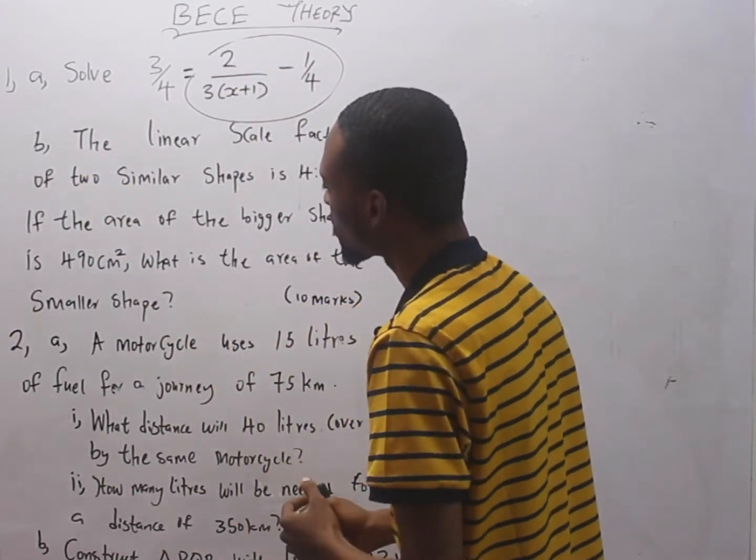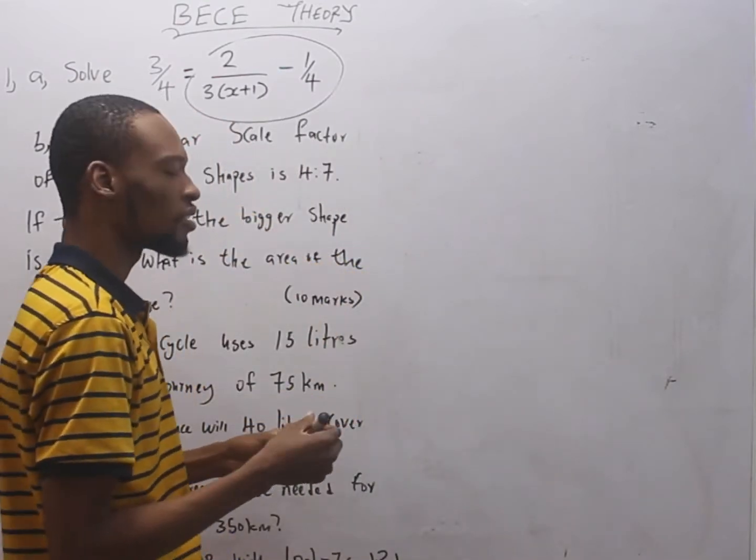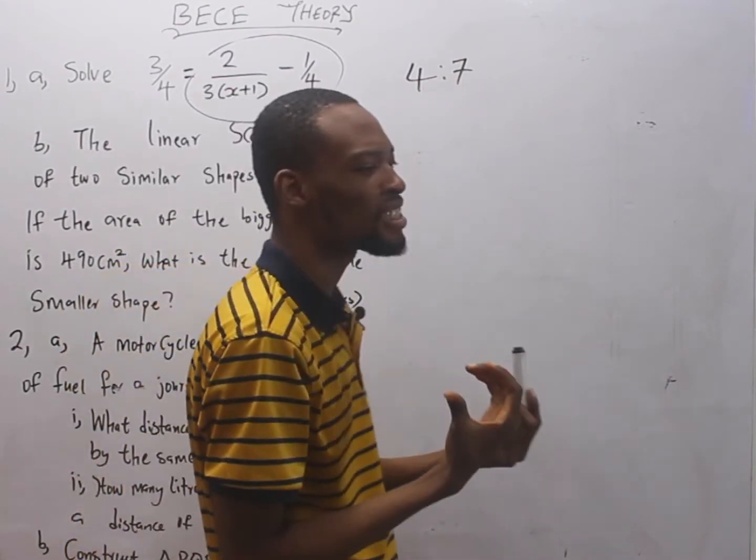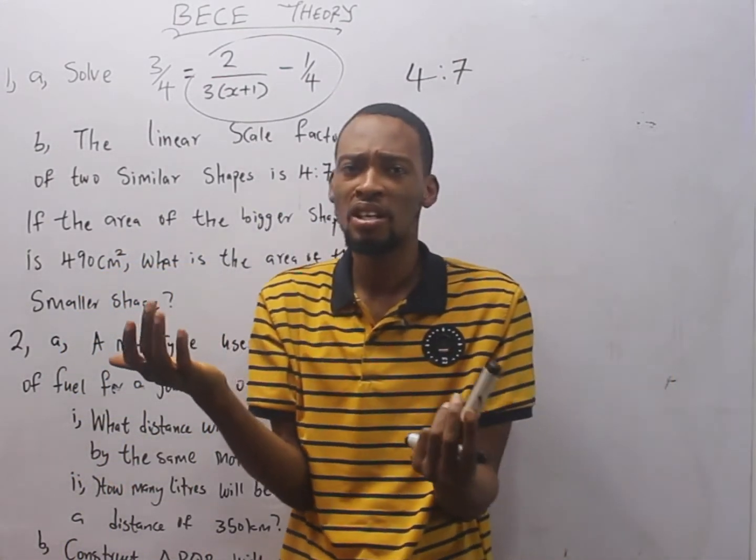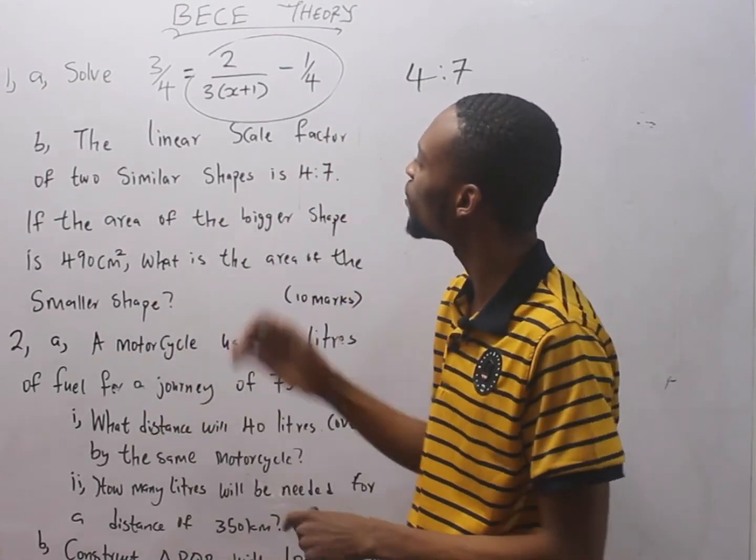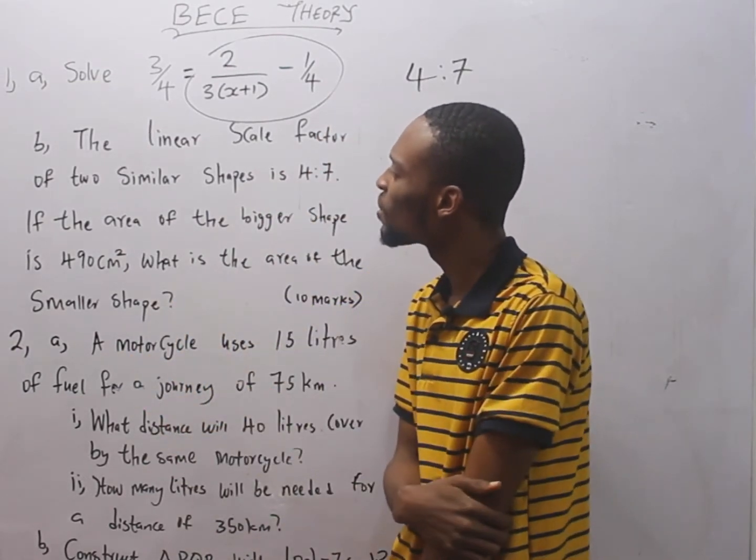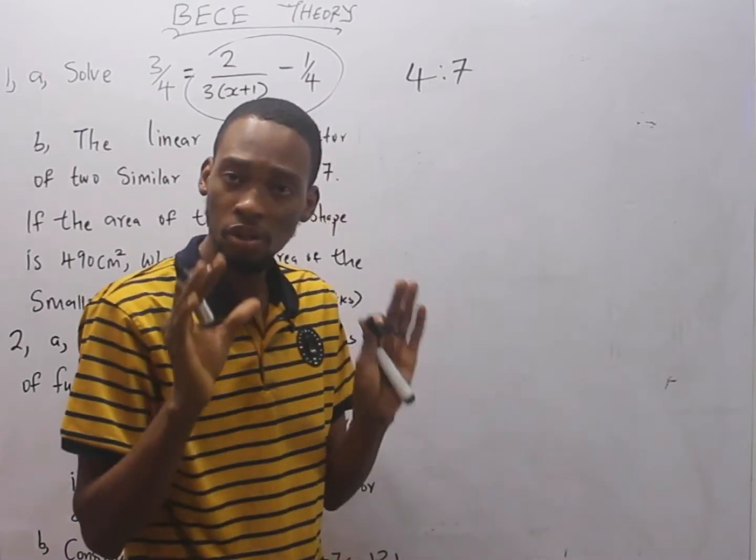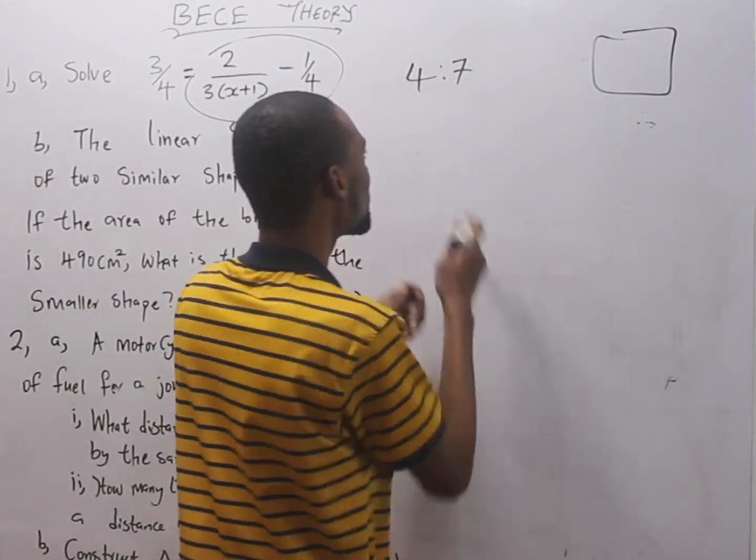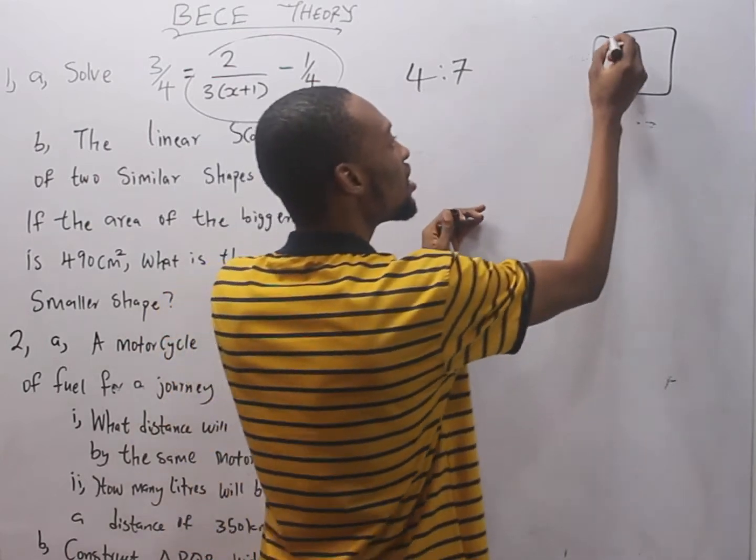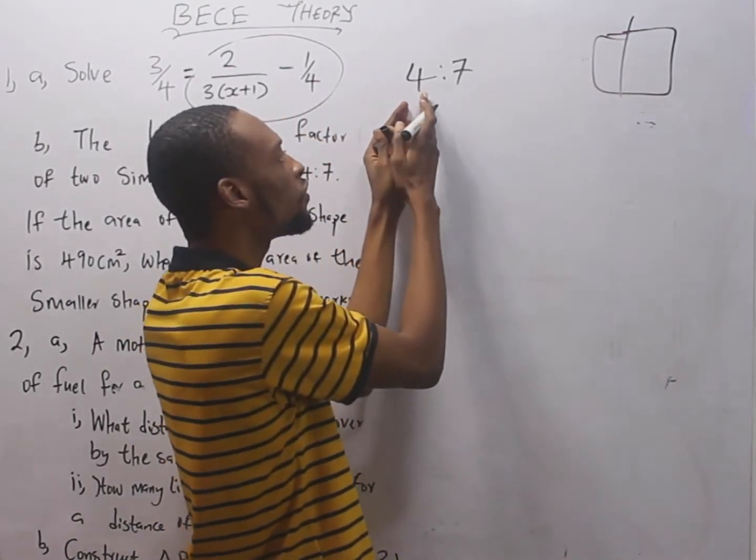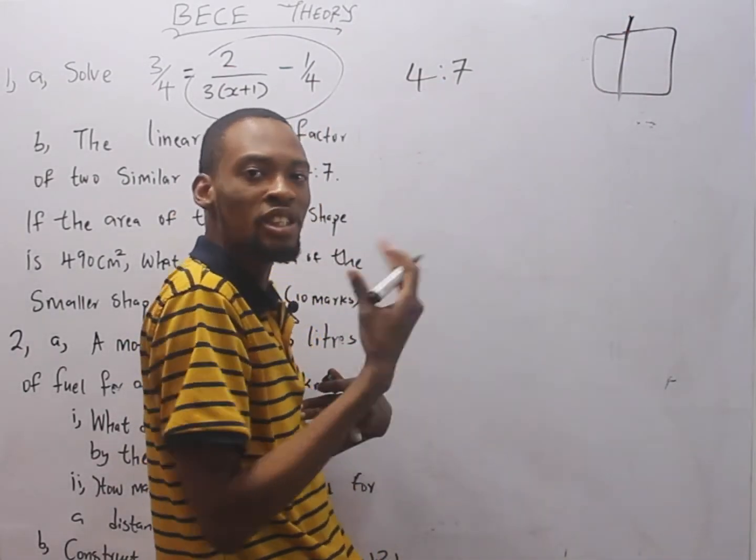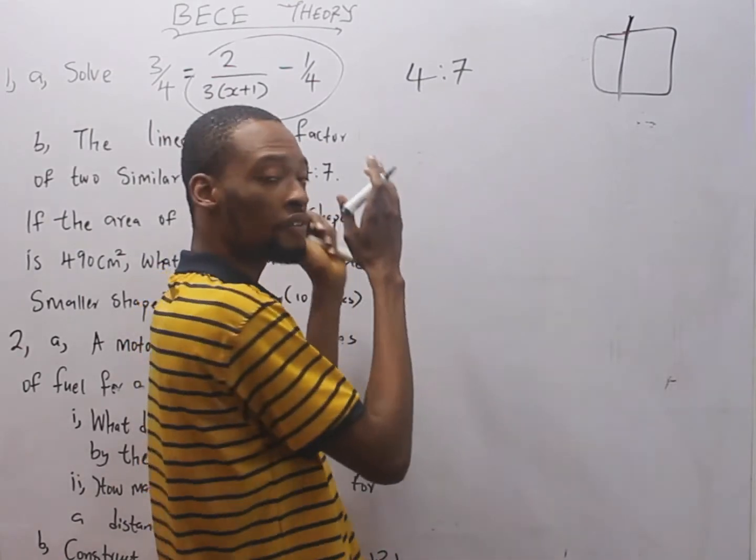This is a ratio question. 4 ratio 7. Now, some grammar should not even bother you. You will be wasting time thinking of what is linear scale factor. That's not your business. Whether you know it or you don't know it, you know that we have shape. Since there is ratio, it means it's something, something.